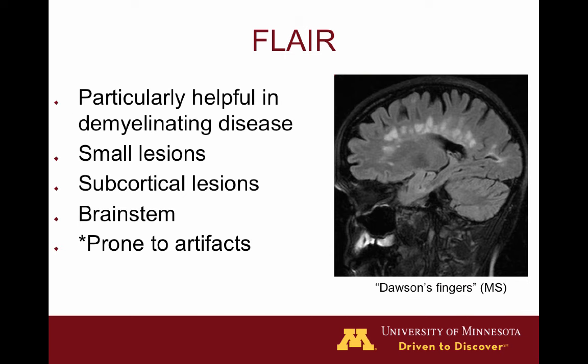This is an example of a turbo FLAIR image with fat saturation in the sagittal plane. You'll see some radiating bands of high signal coming out of the lateral ventricles, which is pretty pathognomonic for multiple sclerosis. These are called Dawson's fingers, and they have this particular orientation because they're surrounding veins — they have a perivenular location. FLAIR images are nice to detect small lesions, peripheral lesions in the subcortical white matter or cortex, and lesions in the brainstem, but there can be lots of artifacts with this sequence.